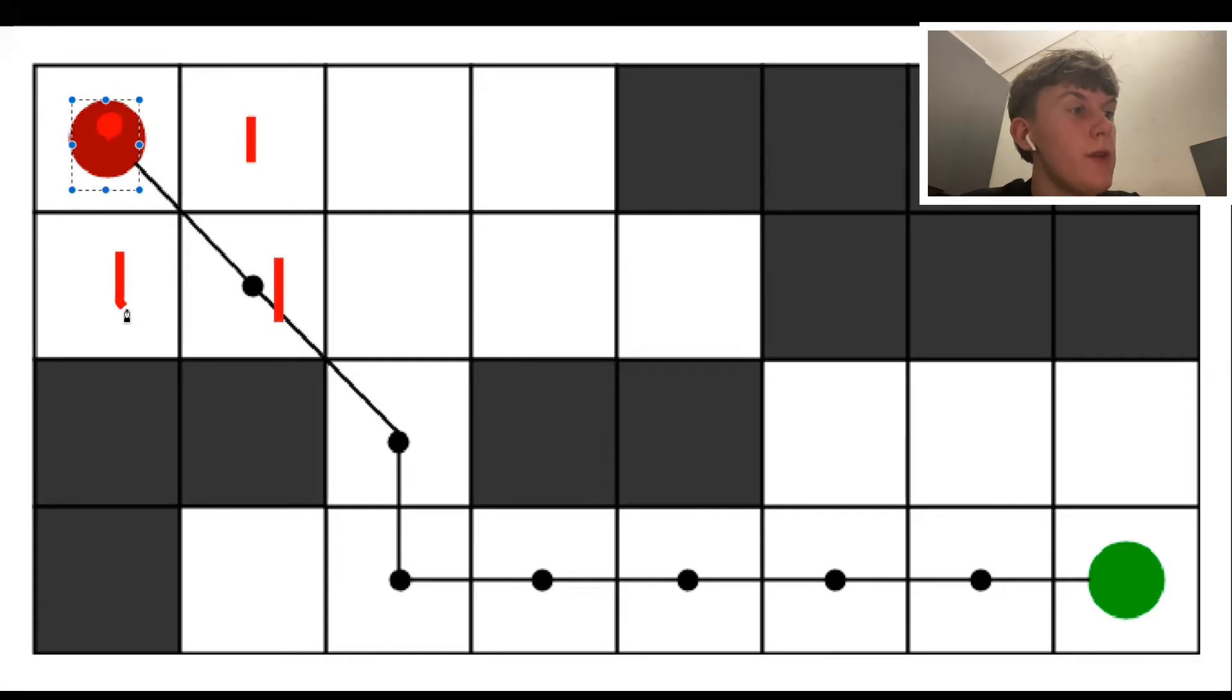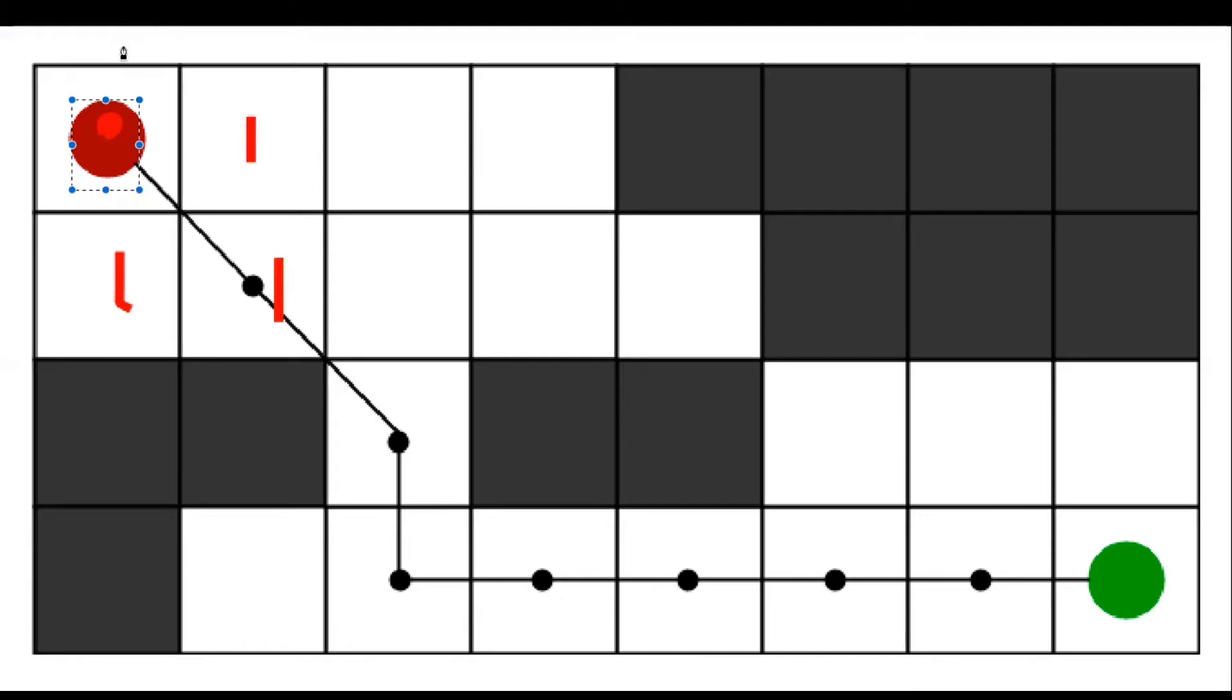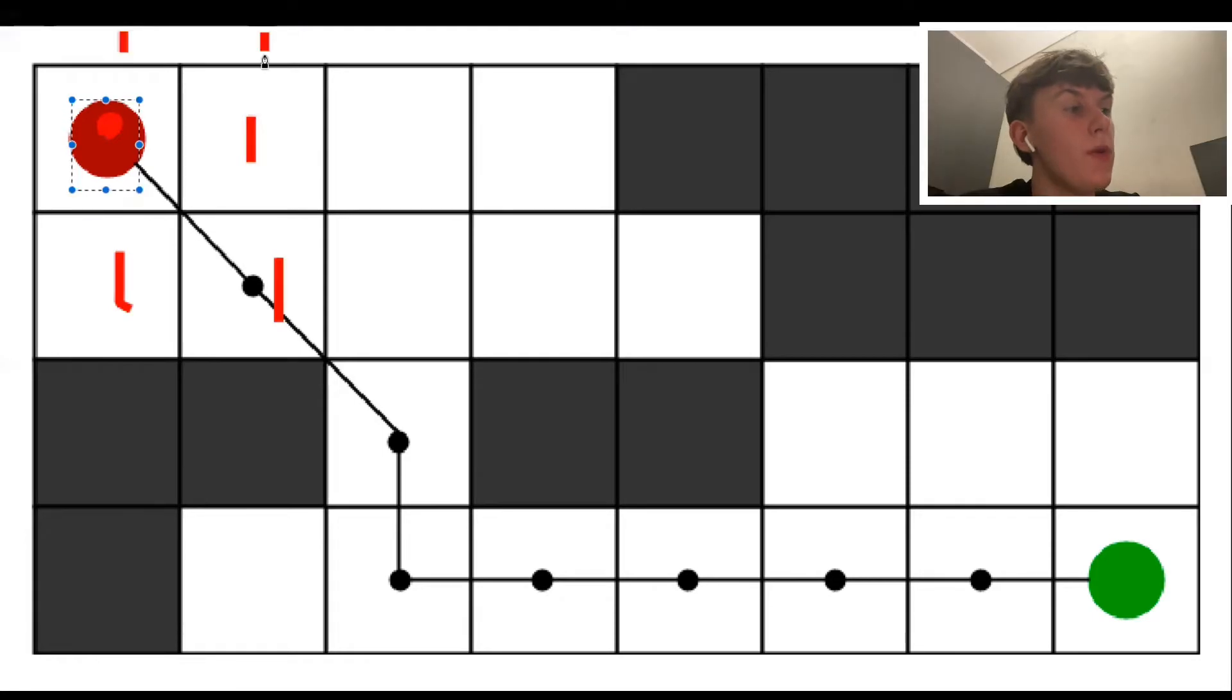Within this grid we can imagine every node edge is worth a metric unit of one. So I'll draw a one around the adjacent nodes of the start node. So now we know the distance between the adjacent nodes and the start node.